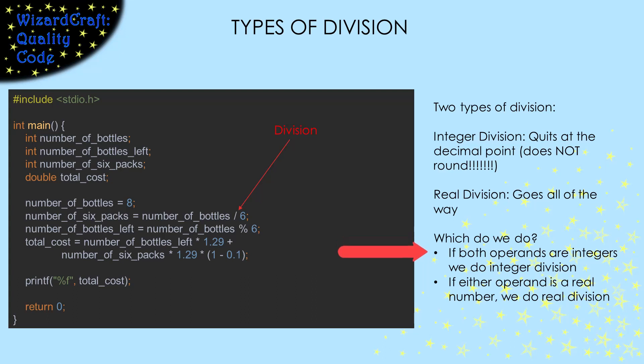The answer is in the types of the operands. If both of the operands are integers, then the slash means integer division. If either one of the operands is a real number, then the slash means real division. In this case, since both number of bottles and six are integers, the slash means integer division, which is perfect because we want to know the number of full six packs we can buy.